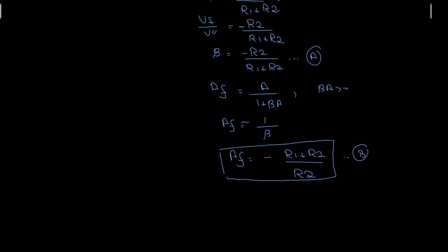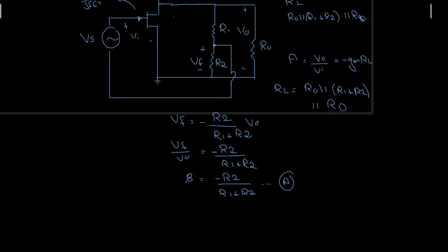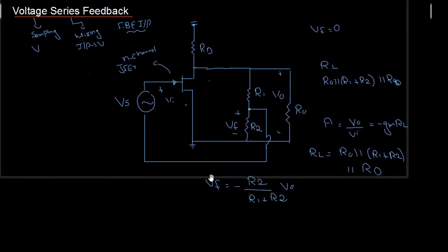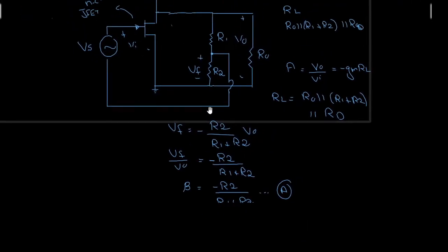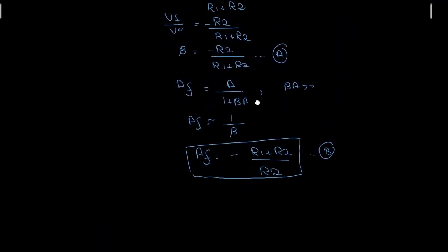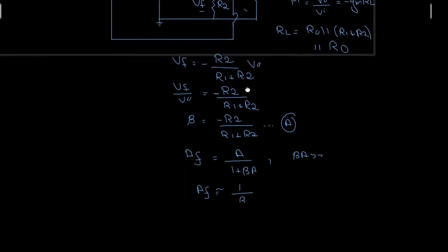Let me name that equation B. Now, why do we call it the voltage series feedback circuit? The output is voltage, the input is also voltage, and the feedback voltage is in series with the input signal. That is why it is called the voltage series feedback circuit. This is the gain without feedback and the gain with feedback for this voltage series feedback circuit.